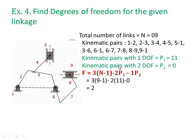So we have seen how a mechanism and machine are differentiated, the different types of links, different types of joints, different types of kinematic pairs, the meaning of degree of freedom, how to calculate the number of binary, ternary, and quaternary joints and links, and how to find the degree of freedom for a given linkage. Thank you.